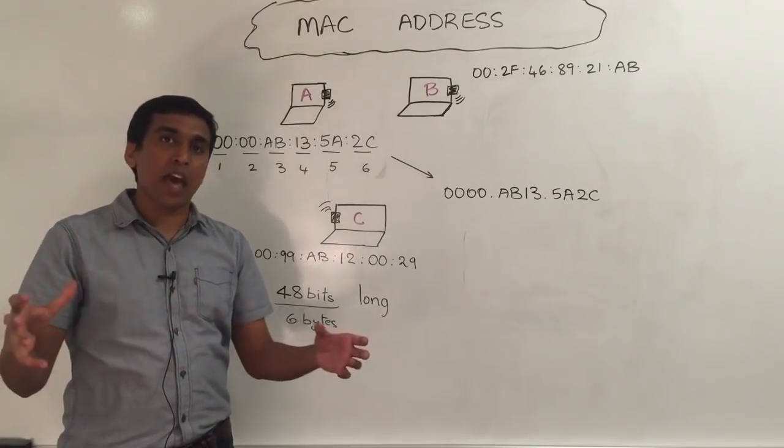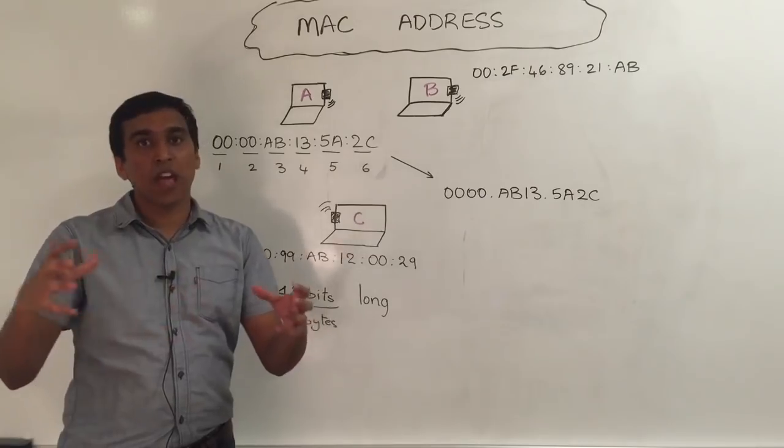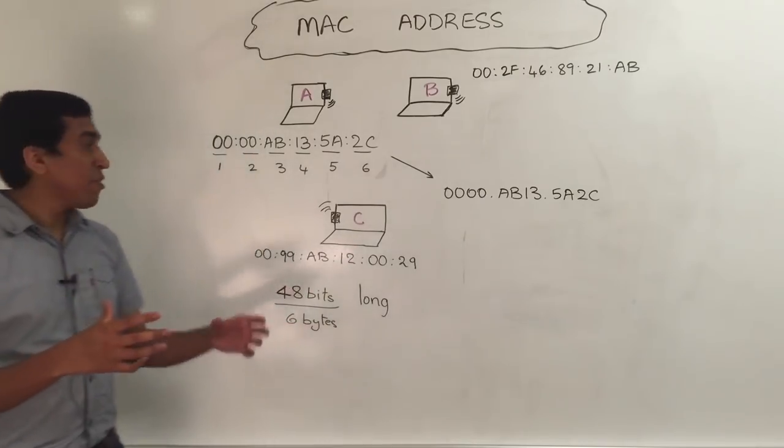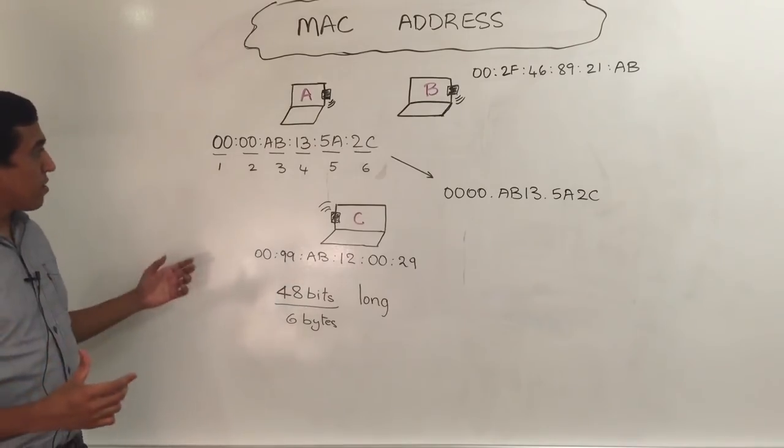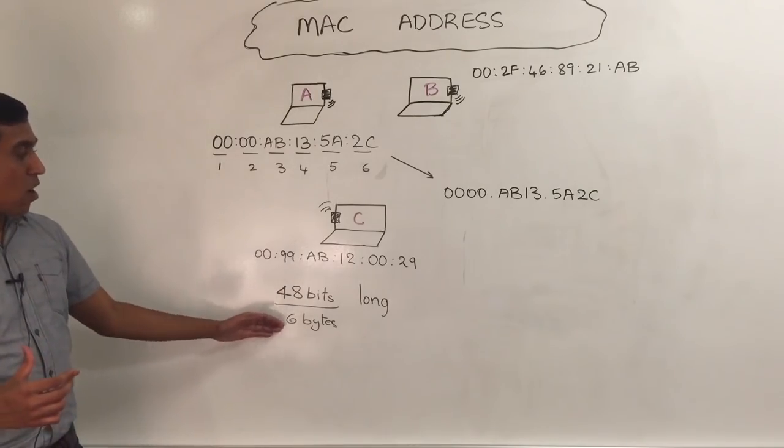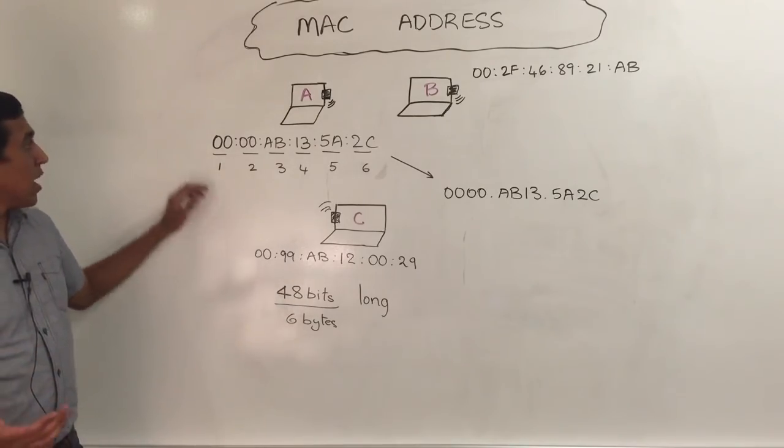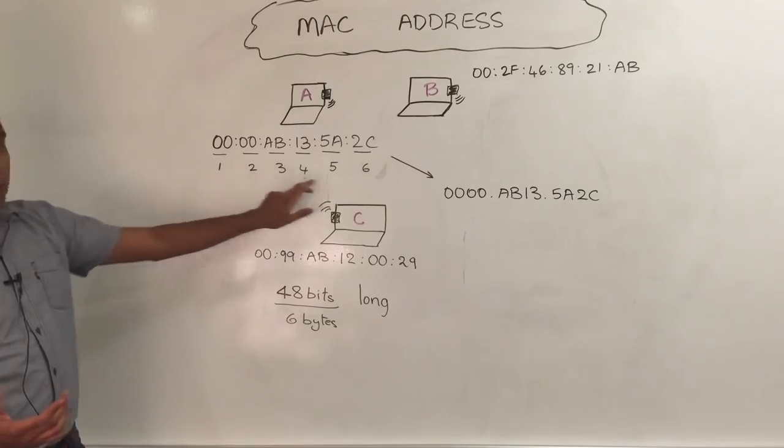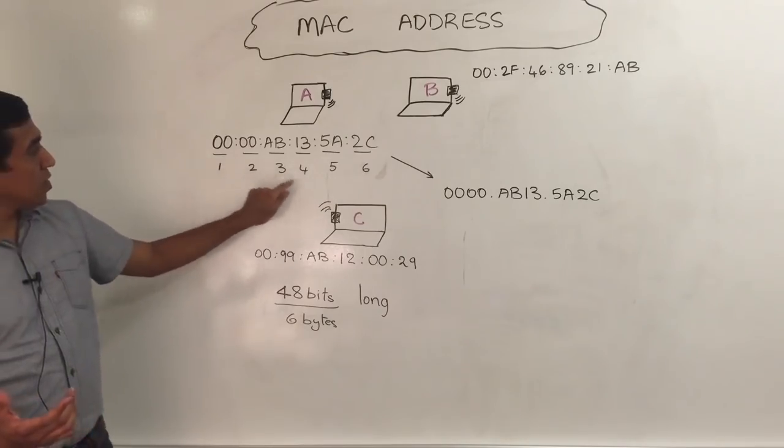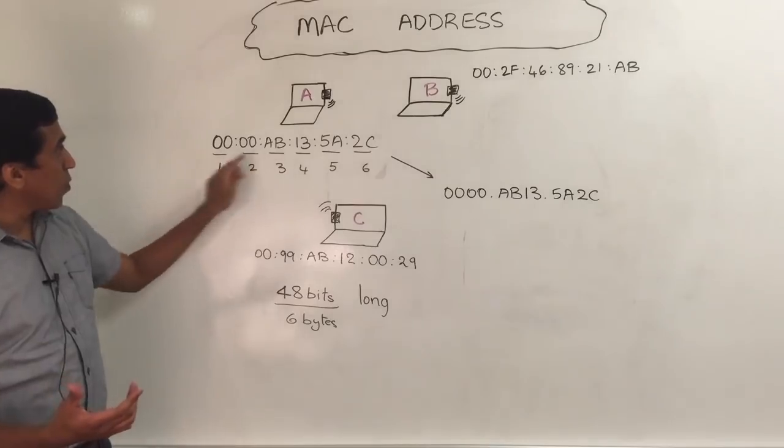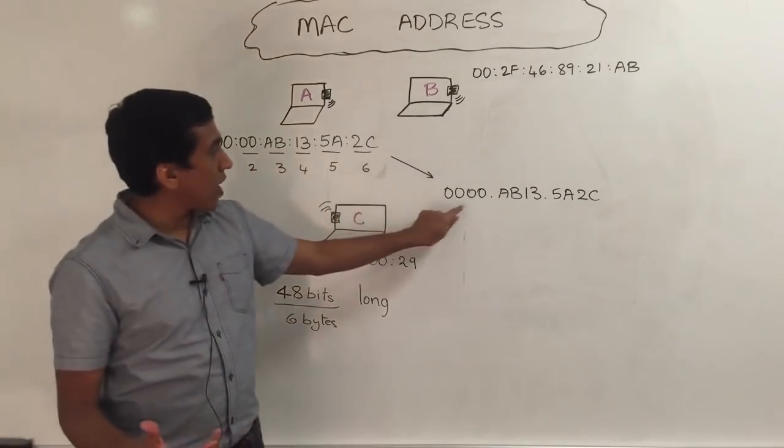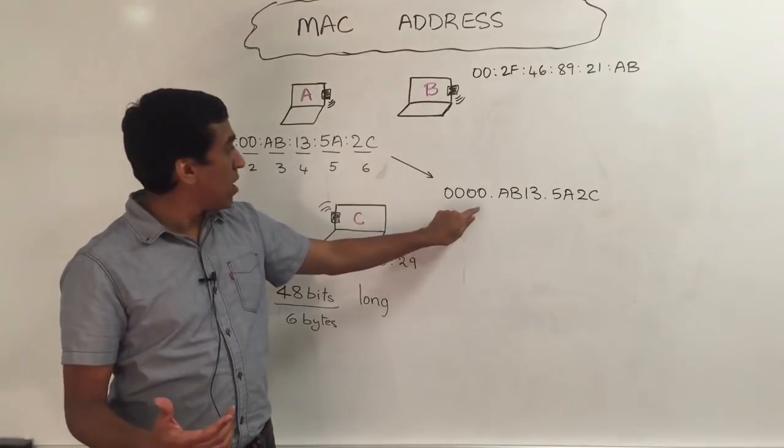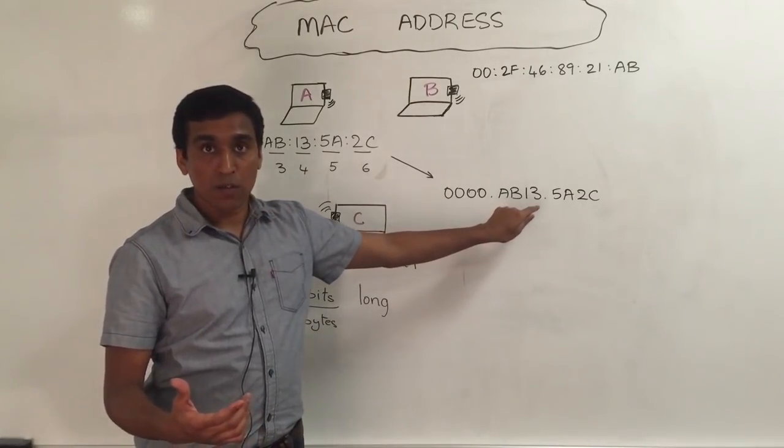Just like humans have names, which are composed of alphabets, we have hexadecimals for representing the MAC addresses. A MAC address is six bytes long or 48 bits. It is usually represented in this format. You have one, two, three, four, five, six bytes, which are separated by a colon, or you can write two bytes together and separated by a dot.